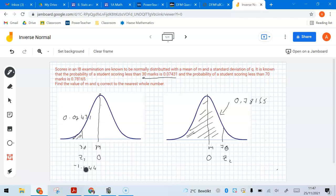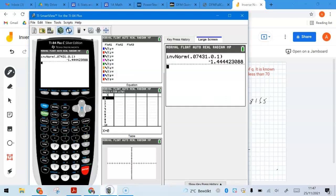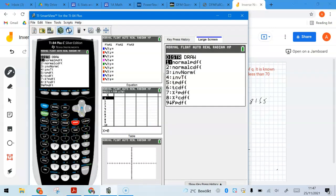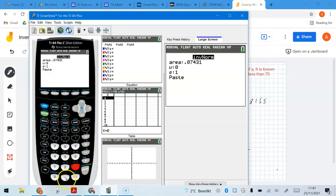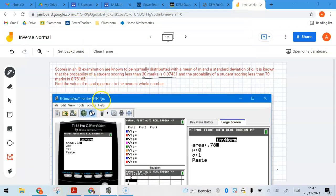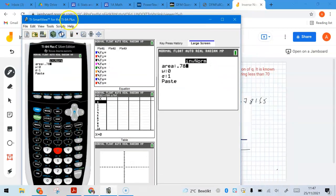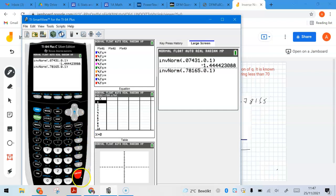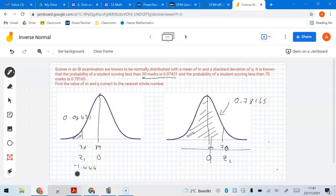I'm going to do the same to get this Z value. And I'm going to make up two simultaneous equations after that. So back into the calculator. Repeat that again. Second distribution, number 3. But this time 0.78165. Let's do that. Go down to the bottom. And this value will give me 0.777 recurring.